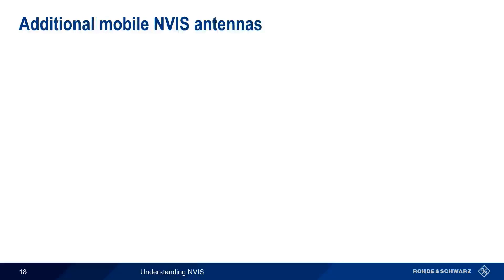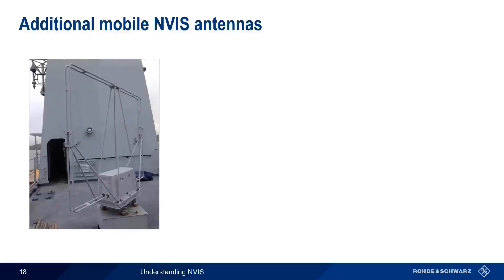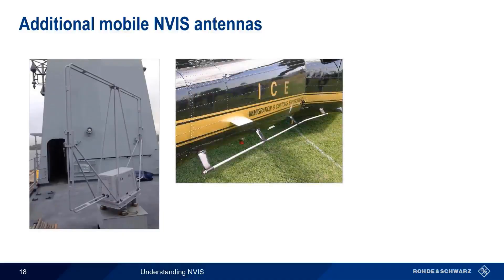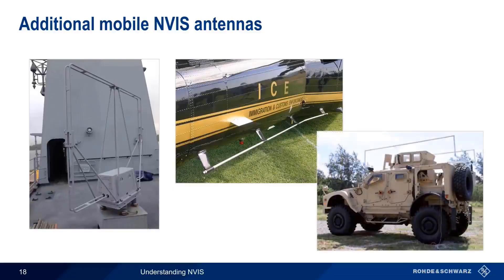Here are some additional images showing mobile NVIS antenna implementations. The first is a loop-style antenna, in this case mounted on the deck of a ship. Another common NVIS antenna variant used in mobile applications is the so-called towel bar, as seen here. Towel bar antennas have the advantage of being low-profile and sturdy, and a single towel bar is one of the most common methods of deploying NVIS on an airborne platform. A double towel bar arrangement increases the effective size of an antenna and therefore increases the antenna's bandwidth performance. Note that towel bar antennas can be implemented to operate as dipoles, loops, or inverted L-type antennas.